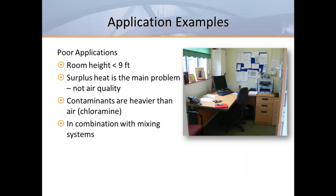Now let's look at the places where we wouldn't recommend using displacement. Since displacement works best in large open spaces, confined spaces with low ceilings don't allow us to take advantage of stratification — these spaces are best handled with mixed air systems. If the heat loads are greater than 30 BTUs per hour per square foot, we would likely create a drafty environment if we tried to use displacement.